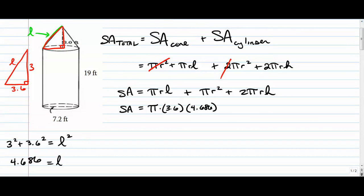And let's finish the rest. πr² is π times 3.6² plus 2 times π times 3.6 times the height. This height, of course, is not the height of the cone, but it's the height of the cylinder, which is 19. So your total surface area is equal to, if you type all that into your calculator, 523.484 square feet.